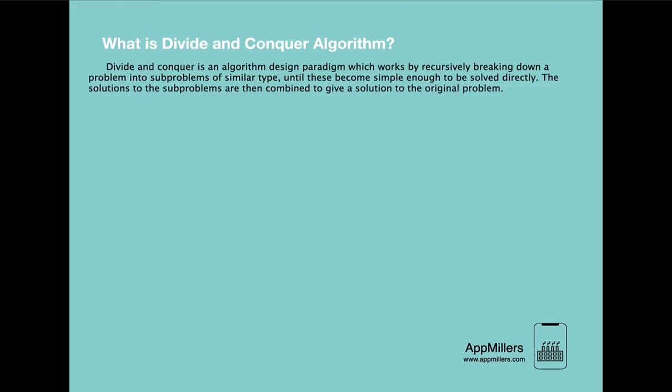The first topic is: what is divide and conquer algorithm? By definition, divide and conquer algorithm is an algorithm design paradigm which works by recursively breaking down a problem into subproblems of similar type until these become simple enough to be solved directly. Then the solutions to the subproblems are combined to give a solution to the original problem. This means if the given problem can be broken into smaller similar problems, the divide and conquer approach can be used.